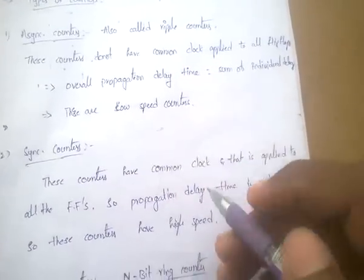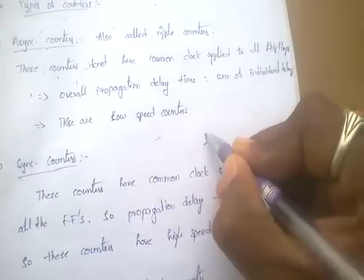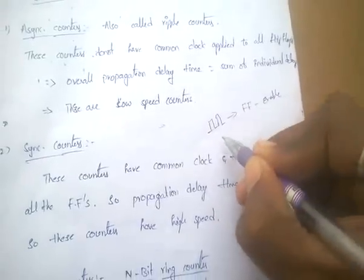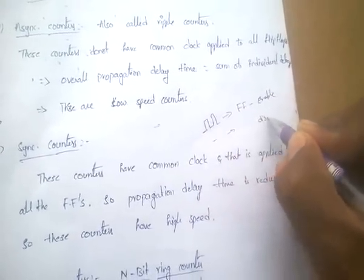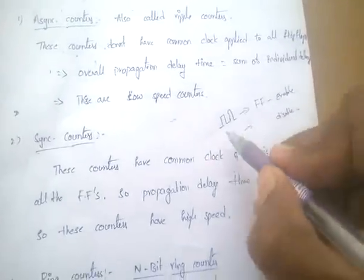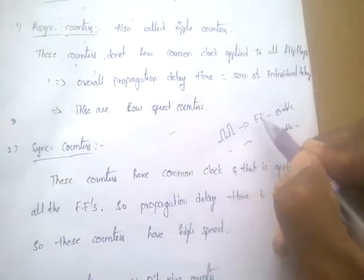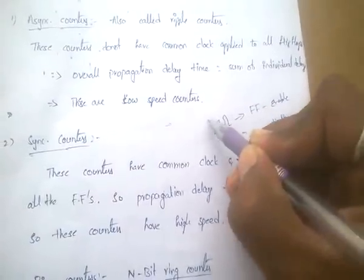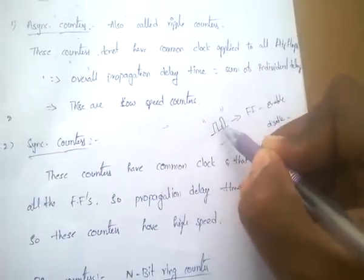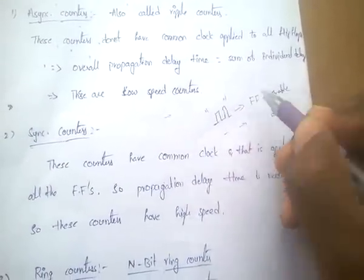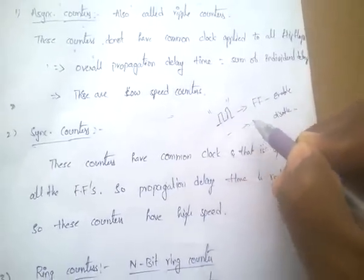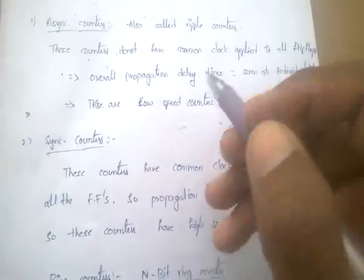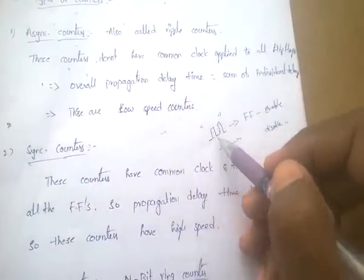The importance of the clock signal: when we use a clock signal, the flip-flop is enabled. Without the clock signal, the flip-flop is in a disabled condition with no output. Whenever we apply the clock signal, the flip-flop performs its operation. In an asynchronous counter, the clock signal applied to each flip-flop is different.